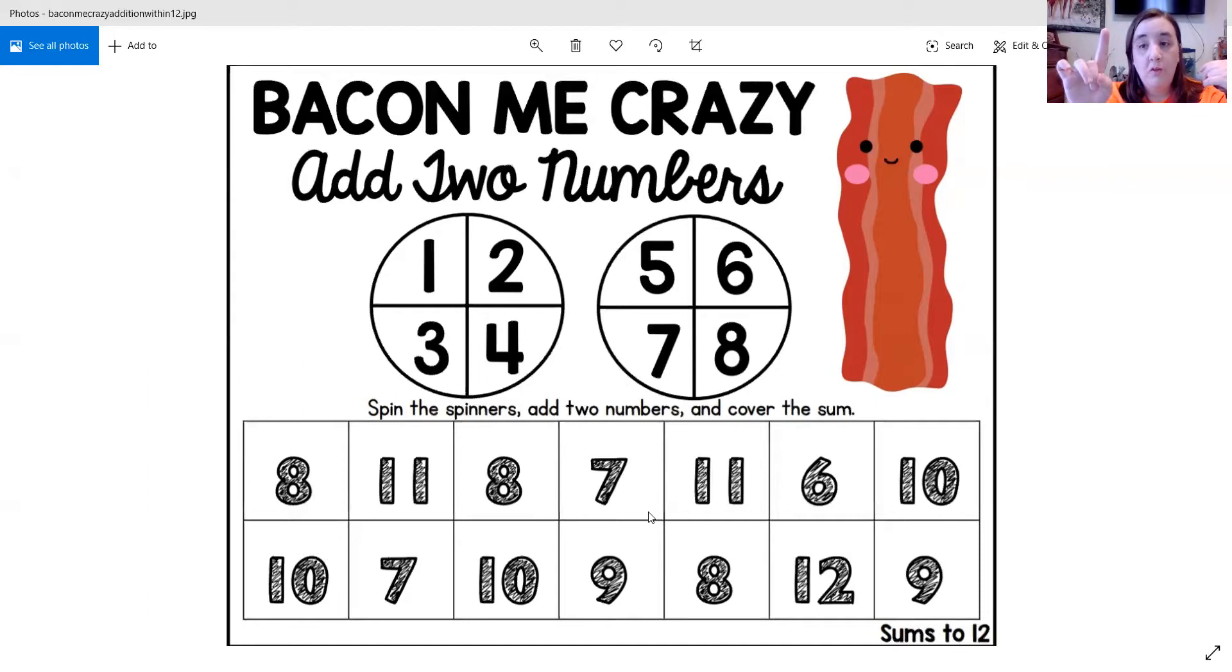Another way you can do it is you can do counting on. So since my equation was 2 plus 7, I would say the bigger number. Not show it. I'm going to keep my hands together. I'm going to say 7. That's my bigger number. And then I'm going to show 2. And then I say counting on after 7: 8, 9.